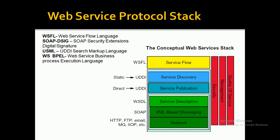In the diagram you can see these four layers: the network layer, also called the transport layer; second is XML-based messaging, also called the packaging or messaging layer; third is the service description layer, also called the WSDL layer; and the fourth is the service discovery or service publication layer, also called the UDDI layer, which combines service publication and service discovery. These four components constitute the web service protocol stack.